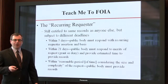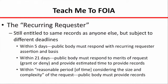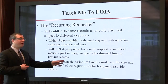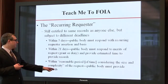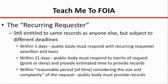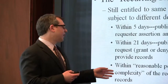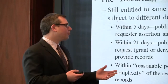If you are deemed a recurring requester, here's how it works. Within the same five business days as any other response, the public body must respond to you asserting the recurring requester rule and the basis for it. That then gives the public body 21 days to respond to the merits of your request — that is, whether it will grant or deny the request — and to provide you with an estimated time to provide the records. That time must be a reasonable period considering the size and complexity of the request. The public body must then provide the records within that reasonable time period. What will be deemed a reasonable period of time has not been litigated yet, so we'll have to see what happens there. But if you've made a request for last year's budget and it takes a public body a month or two to respond, you would likely have a very strong argument that, considering the size and simplicity of the request, a one- to two-month period is not at all reasonable.